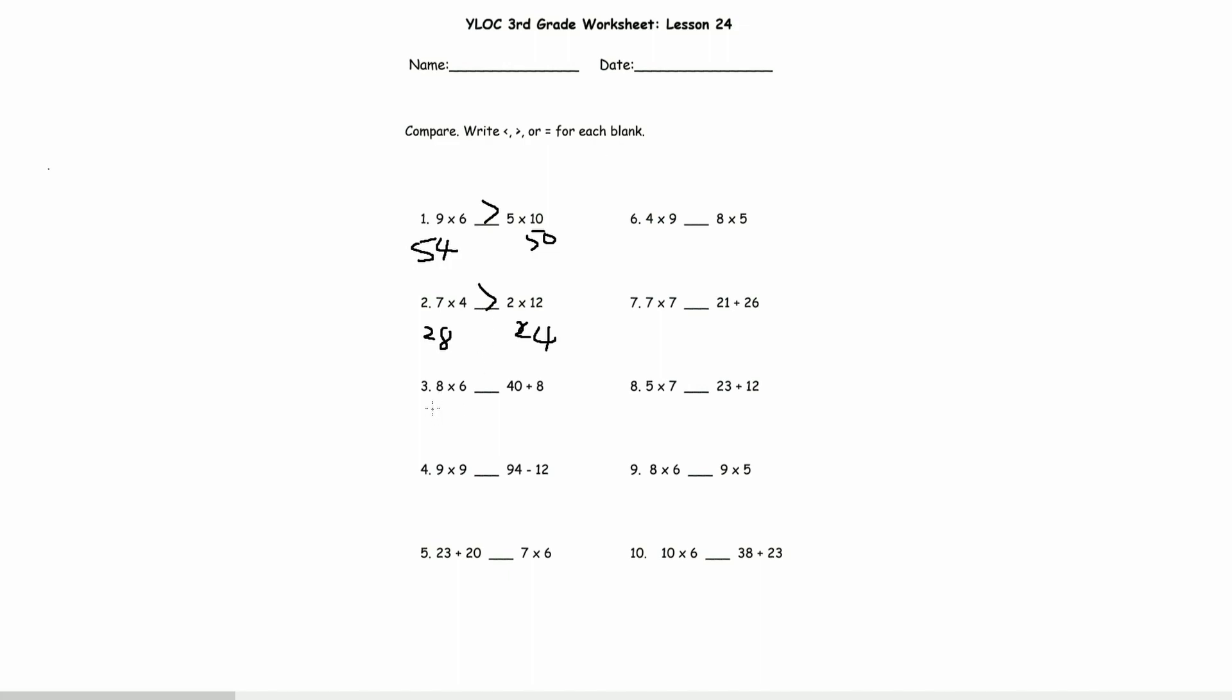6 times 8 is 48, and 40 plus 8 is also 48. So that would be equal to. 9 times 9 is 81. 94 minus 12, 4 minus 2 is 2. 9 minus 1 would be 8. And 82 is bigger by 1.